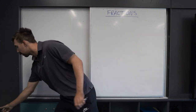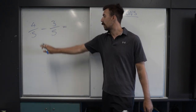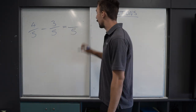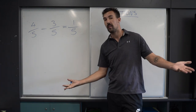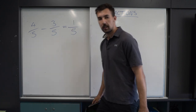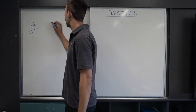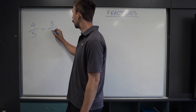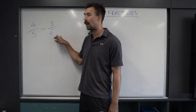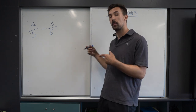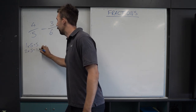What about subtraction? Let's say we have 4 fifths take away 3 fifths. If the denominator is the same, the denominator stays the same, and we can do 4 take 3 — taking away the numerators. 4 take 3 equals 1. So 1 over 5 is the answer. But because we're in high school, we need to get a little more challenging. Let's make it 4 over 5 take away 3 over 6. First, we need to find the lowest common multiple of the denominators.